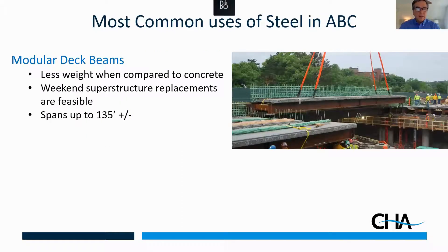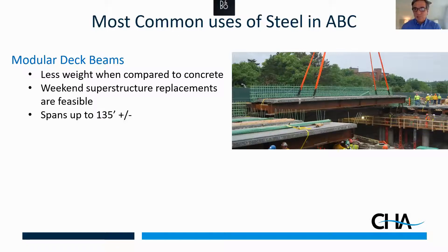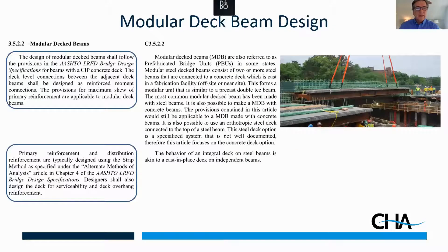As an example of a modular deck beam, this is the I-93 FAST 14 project in Medford, Massachusetts — a very famous project where we replaced 14 multi-span superstructures in 10 weekends, doing up to two bridges a weekend, up to six spans a weekend with a 55-hour closure. These are superstructure replacements. In the actual guide spec, the definition of a modular deck beam tells you how to design one. The key is we use an emulative design approach, meaning you design the beam as if it were a cast-in-place deck.